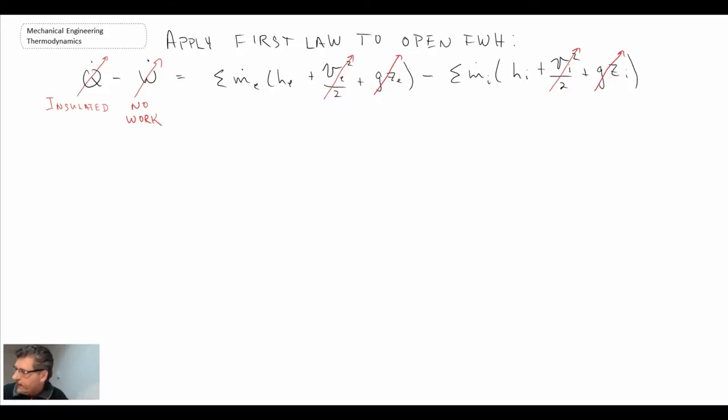And so with that, our first law simplifies somewhat. It's basically just the mass flow rate times the enthalpy of your exit streams equating to the mass flow rate of the fluid streams entering multiplied by the enthalpy.